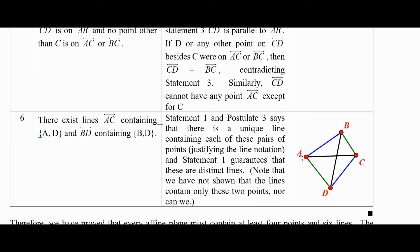We also have to have some other lines. There exist lines AC, BD, and AD because any two pair of points has a unique line containing them. Two points determine a line. That's one of our postulates, Postulate 3.